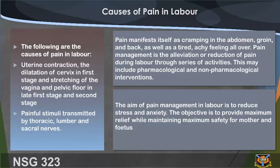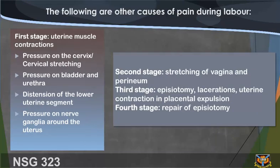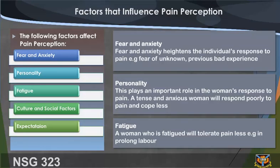The following are the causes of pain during labor. First stage: uterine muscle contractions, pressure on the cervix or cervical stretching, pressure on bladder and urethra, distension of the lower uterine segment, pressure on nerve ganglia around the uterus. Second stage: stretching of vagina and perineum. Third stage: episiotomy, lacerations, uterine contraction and placenta expulsion. Fourth stage: repair of episiotomy.